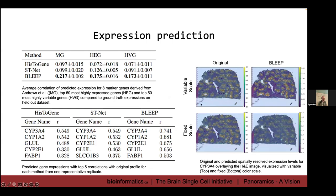The deep learning system creates a joint representation that aligns the image space and transcriptome space using contrastive learning — making sure that matching image patches and transcriptome spots are close to each other in the joint space. Once learned, you can translate between modalities: give it a transcriptome and it generates an image patch, or give it an image patch and it generates a transcriptome. We called this method BLEEP. We tested it on a human liver sample processed with Visium.